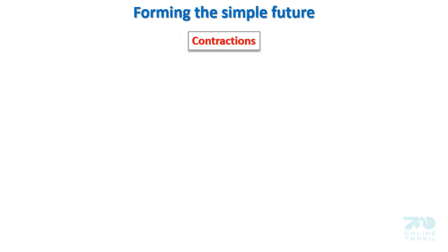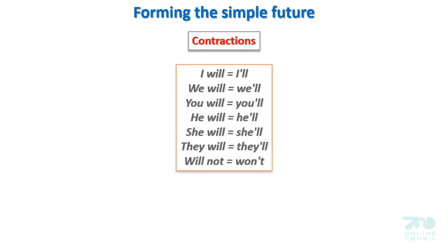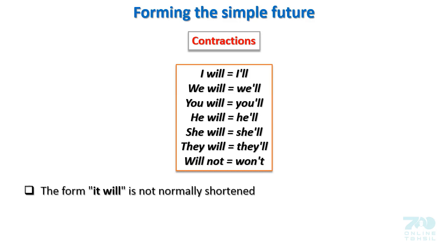Contractions: I will → I'll. We will → We'll. You will → You'll. He will → He'll. She will → She'll. They will → They'll. Will not → Won't. Note: the form 'it will' is not normally shortened.